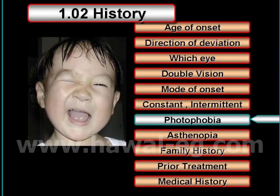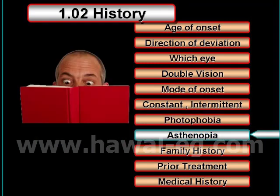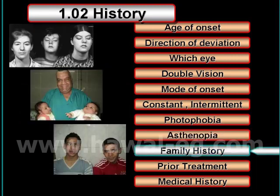Then you ask about the presence of photophobia, which alerts the examiner to the presence of intermittent exotropia. Then you ask about the presence of reading exotropia.